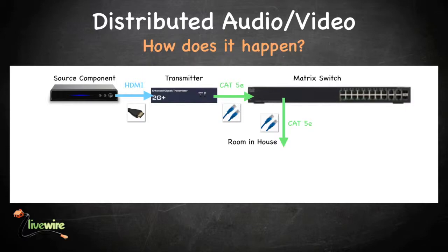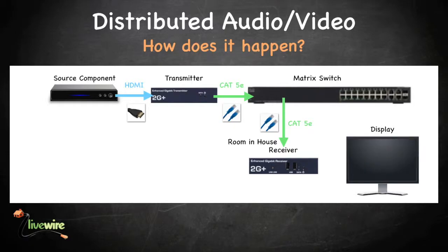The Cat5e, 6, or 7 cable in each room location is connected to the receiver in that room. Finally, the receiver is connected to the display in that particular location with an HDMI cable. So, HDMI cables are used to connect the source components to the transmitters, and HDMI cables are also used to connect the receivers to the displays in each location. Cat5e, 6, or 7 cable is used to connect each transmitter to the matrix switch and the matrix switch to each receiver.